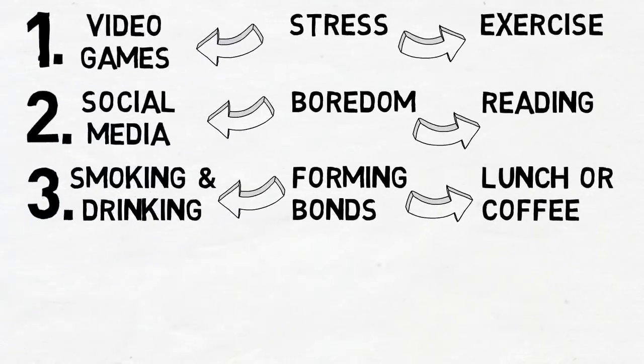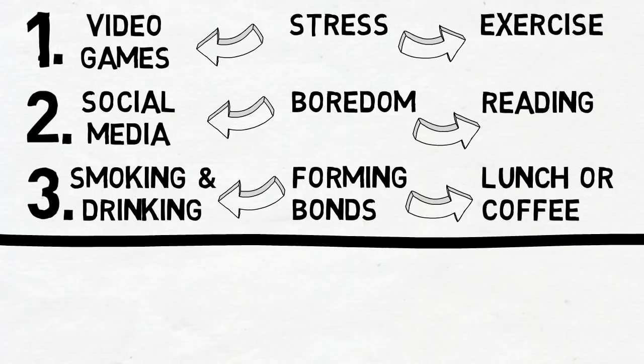Now, while this might sound simple enough, it's far from it. There are other obstacles that Mike had to overcome. Because his bad habits were automatic, Mike still found himself unconsciously performing them, even if he knew about an alternative solution.